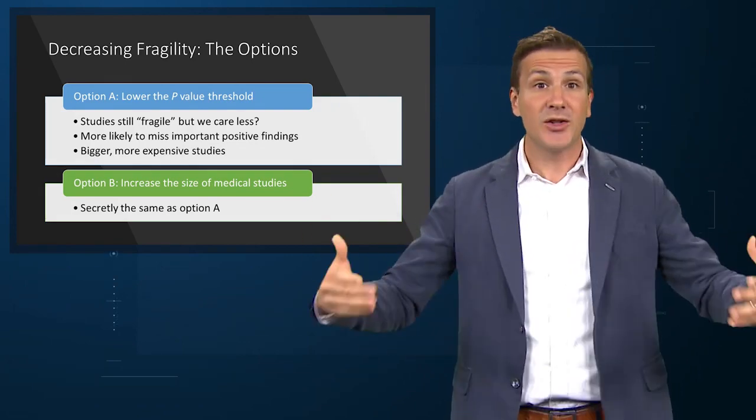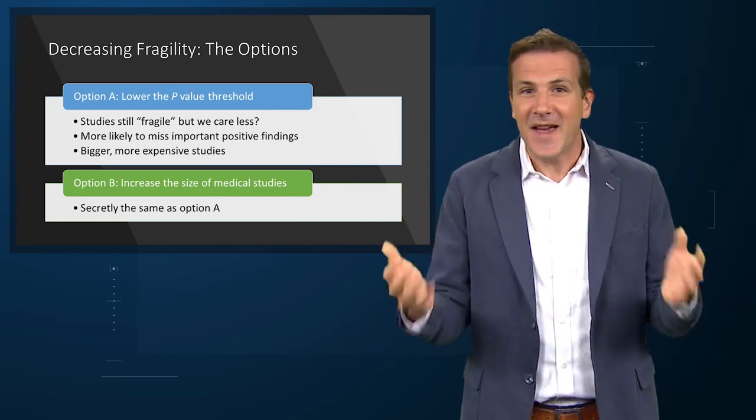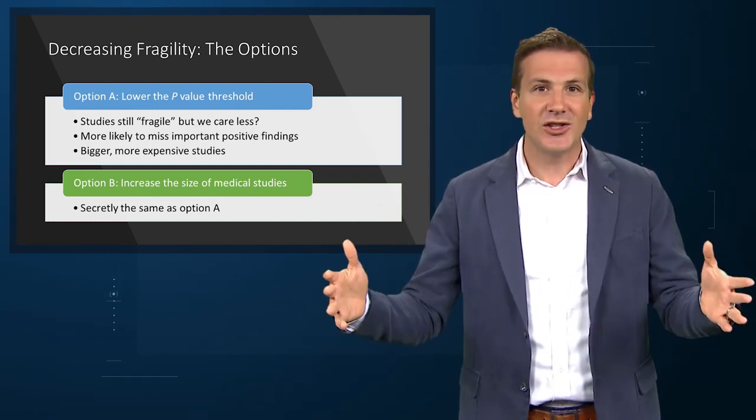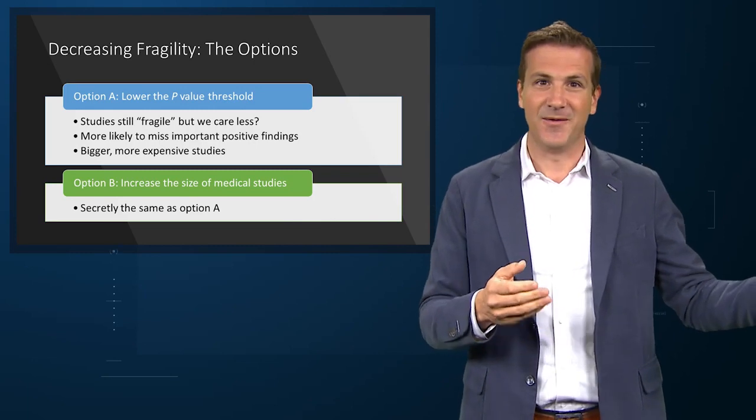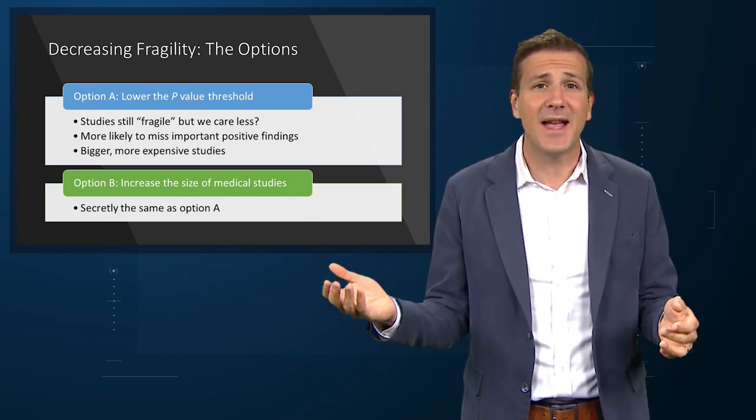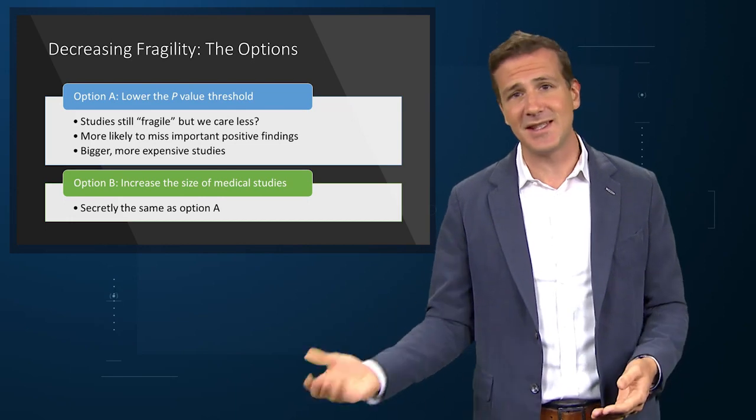Or maybe you think we should just do bigger studies, but realize that if the effect size is the same, doing a larger study will just lower the p-value. And if you do a really large study and get a barely significant p-value, you're probably in the realm of a statistically significant finding that doesn't have much clinical impact. We see so-called fragile studies because studies are designed with the p-value threshold of .05 in mind, and because studies are expensive and expose people to potential risk. If you're spending $50,000 per patient to enroll a clinical trial of a new cancer drug, and all you need is a p-value of less than .05 to get FDA approval, well why would you enroll more than what you need?